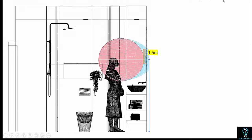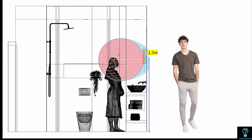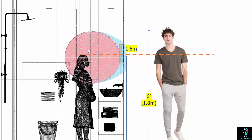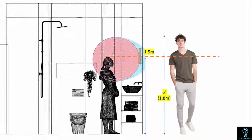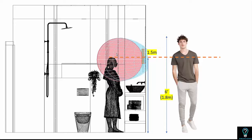The 1.5-meter height placement is good for people approximately 5 to 5.5 feet tall. But if a person is taller — say 6 feet — the light distribution will not be in line with their face and won't evenly illuminate it in the mirror. In such cases, if the average height of bathroom users is in the taller range, position the wall sconces a little higher, maybe at 1.6 meters, to ensure enough illumination on the face.